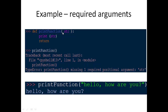We have a print function with one parameter str — it simply prints that string. If you call this print function without any arguments, there will be an error: missing one required positional argument. Since the function has a parameter and we are not passing any, it returns an error. But if we call print with 'hello, how are you', that value is assigned to str and the output will be 'hello, how are you'. This is required arguments.